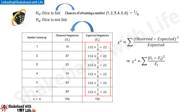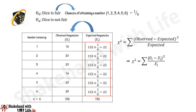This means the theoretical frequency distribution for a fair dice, when rolled 132 times, predicts each number — 1, 2, 3, 4, 5, and 6 — should turn up 22 times. This is our expected frequency distribution. Chi-square as a test of goodness of fit helps us understand how well the theoretical frequency distribution fits with the observed frequency distribution.